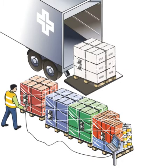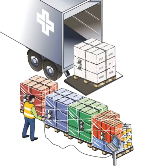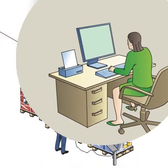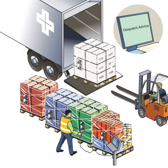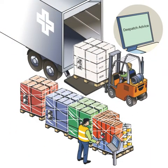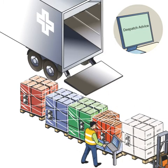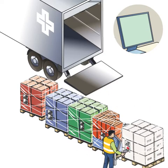When the truck arrives, the receiver scans all the barcodes. The IT system compares the products received to the dispatch advice and reconciles them with the order, detecting any errors. Products that have not been ordered, not correctly identified, or have been damaged in transport are recorded as rejected. The system generates a receiving advice including any rejected items and sends it to the seller.